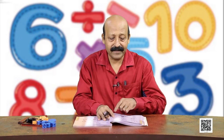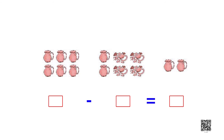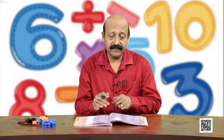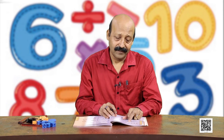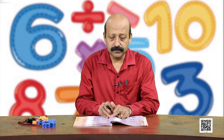There are 6 pots — 1, 2, 3, 4, 5, 6. 4 have broken away. How many are left? Now there is a change — in place of 'take away' we write a symbol called the subtraction sign, and for 'left' we write the equal to sign. So we read it as: 6 minus 4 equal to 2. This sign is called the minus sign. We read it as 'minus'. 6 minus 4 equal to 2.